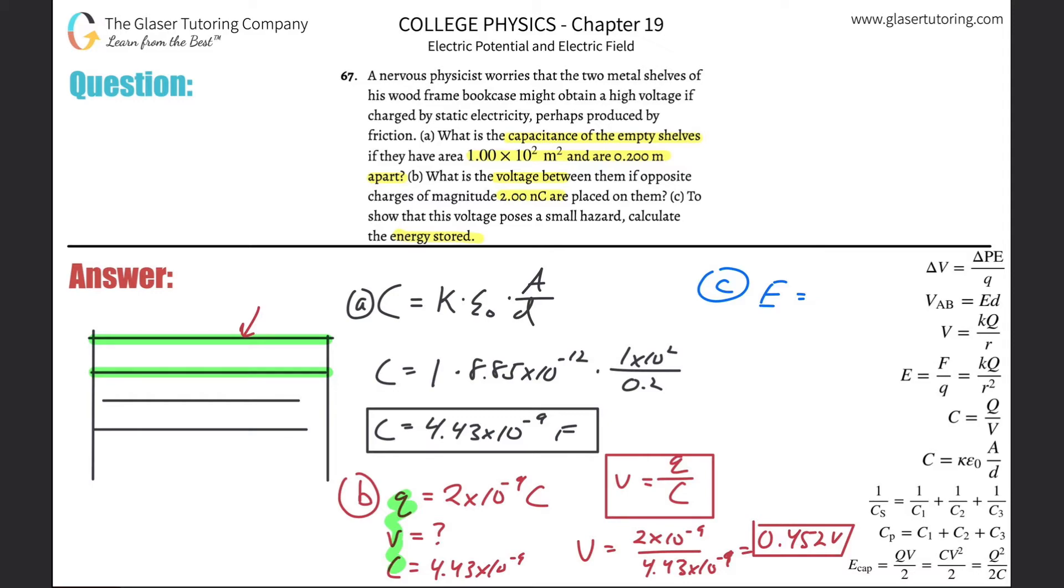I'm going to choose one with the voltage because they want us to show that it poses small hazards. I'm just going to use the CV squared all over 2. So capacitance was 4.43 times 10 to the minus 9th, the voltage here was 0.452 squared, all then divided by 2.